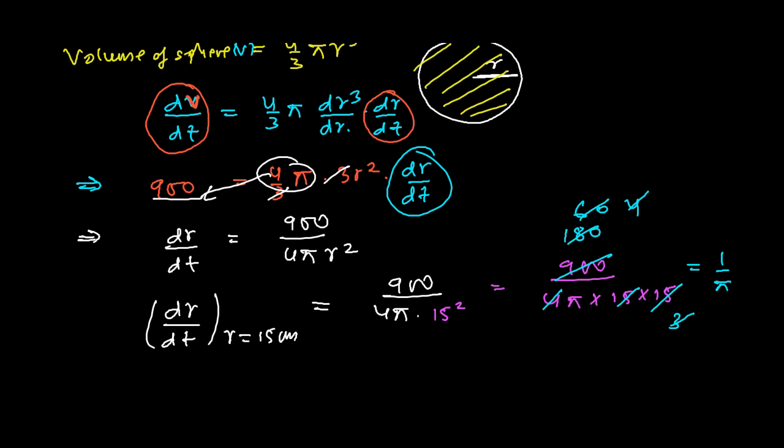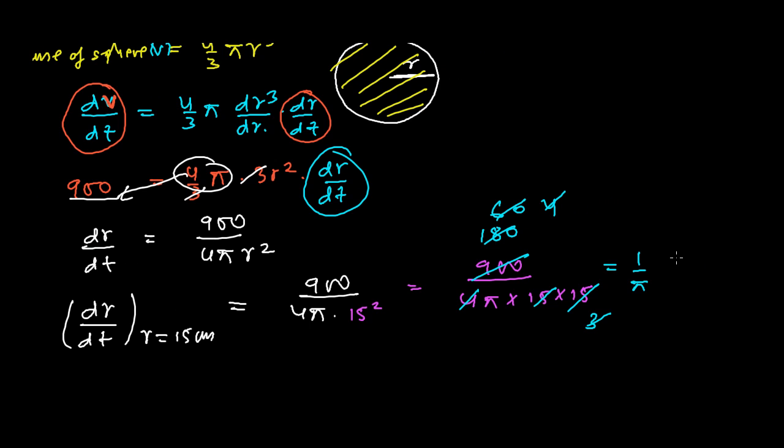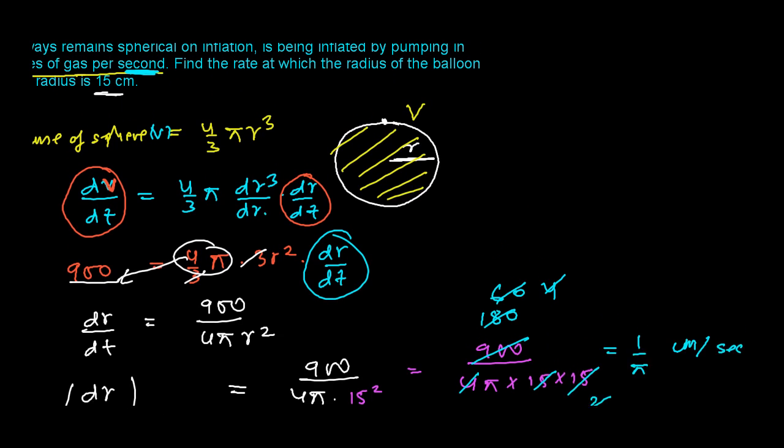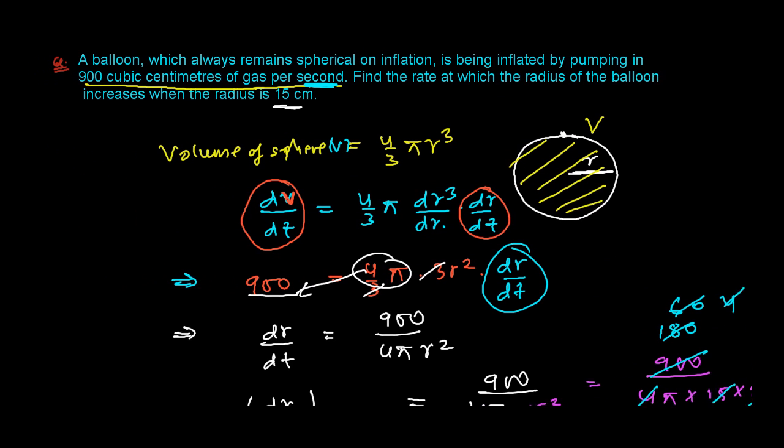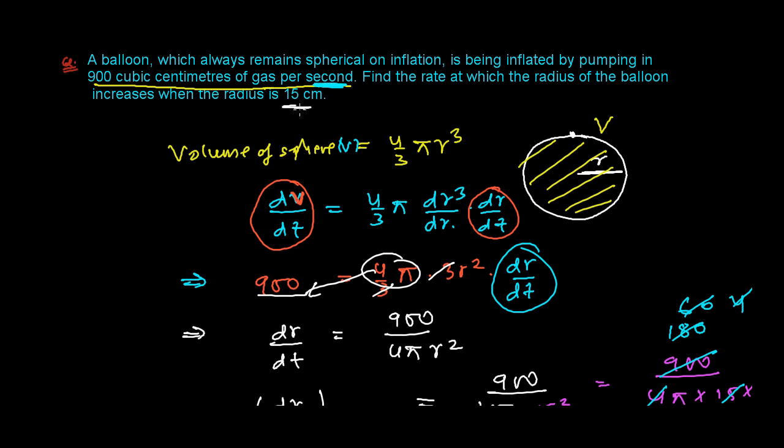So the rate of the increase of the radius when the radius is 15 centimeter is 1 over pi. Now see this is radius, so it will be centimeter and dt is the time so it will be per second. Centimeter per second, so 1 by pi centimeter per second is the rate of increase of the radius when its radius is 15 centimeters.